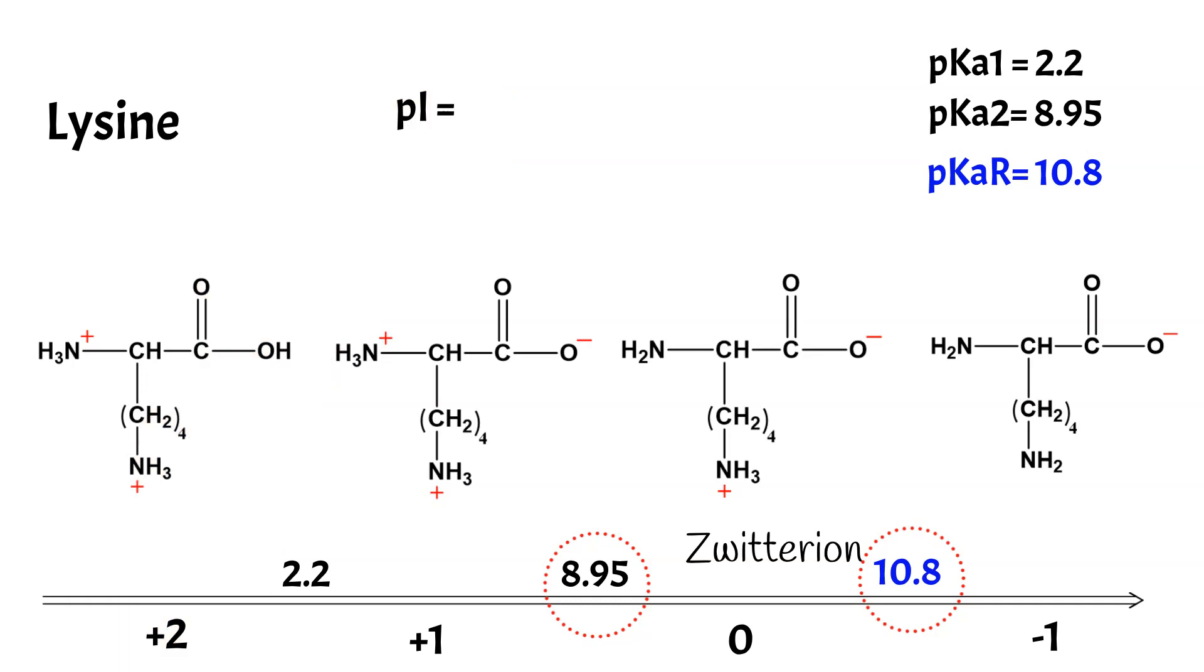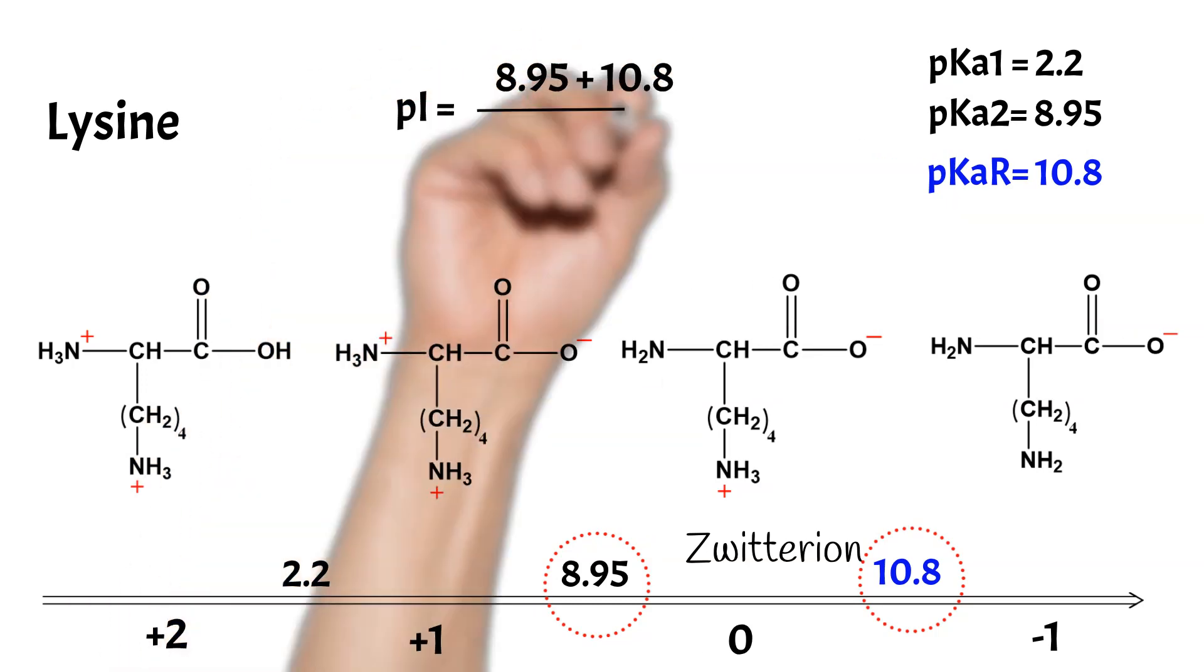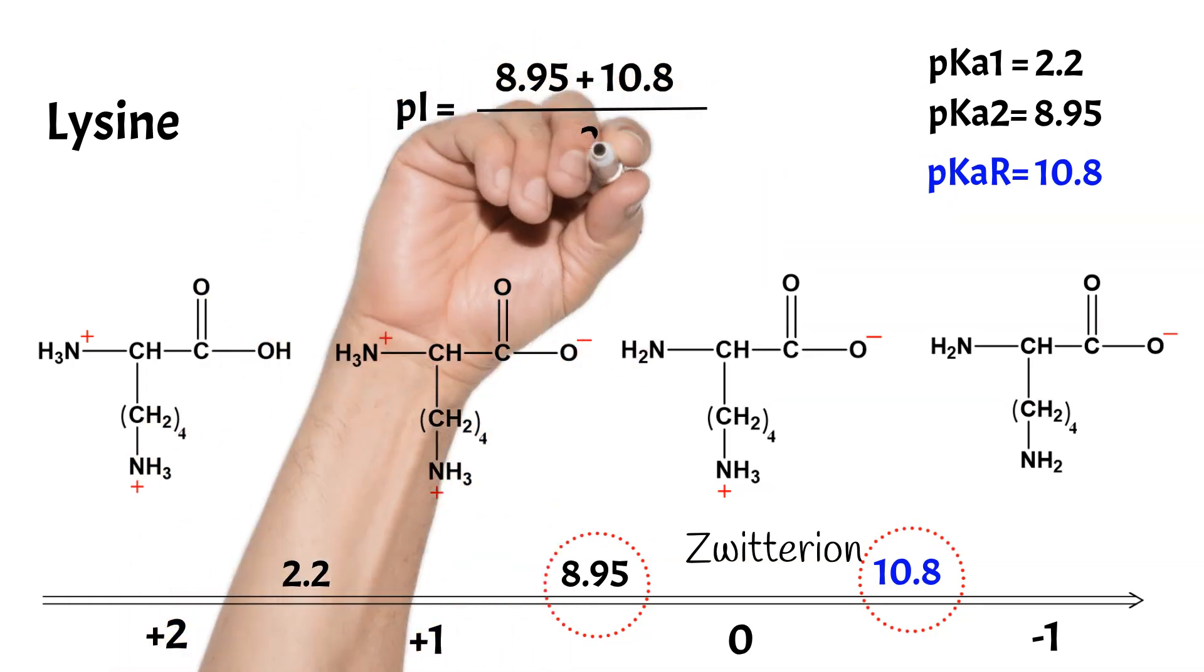The pI value is then calculated using the pK values for the amino groups, pK2 and pKr.